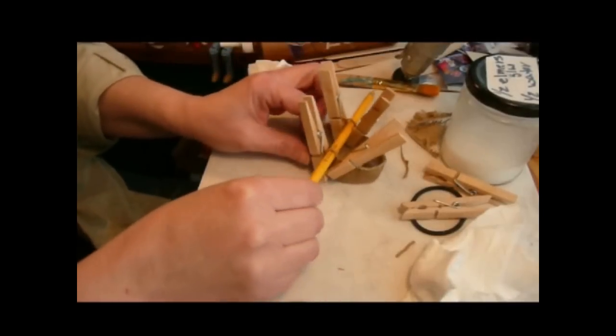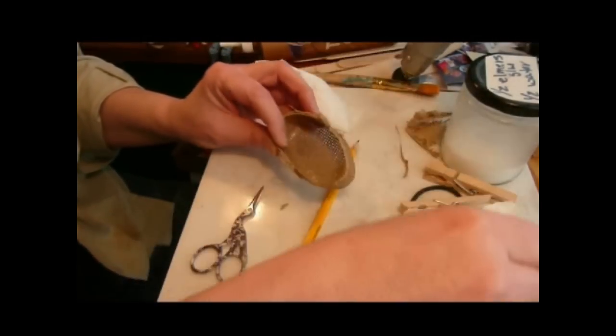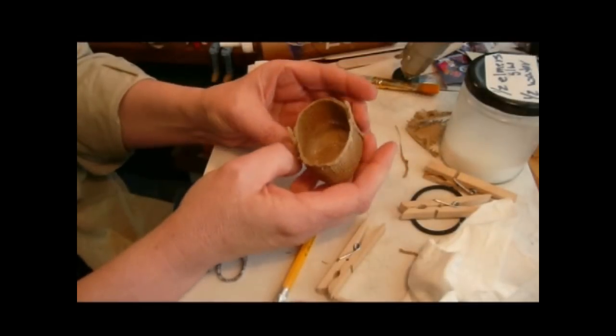So now, let's take the pencil out. This glue isn't completely dry, but it's dry enough to just show you how this turned out. There is our little basket.